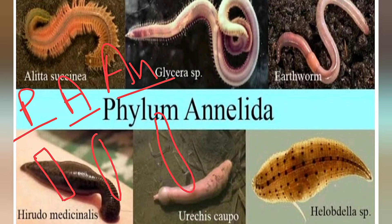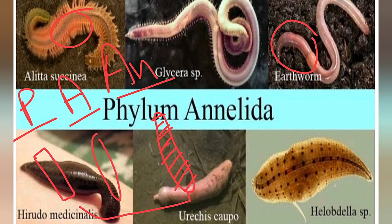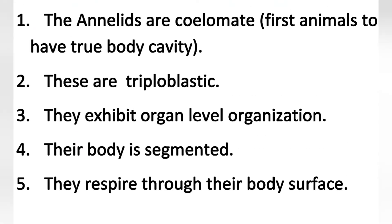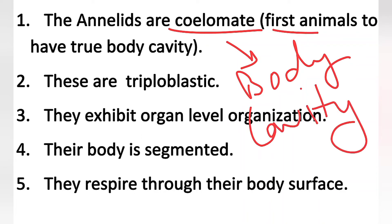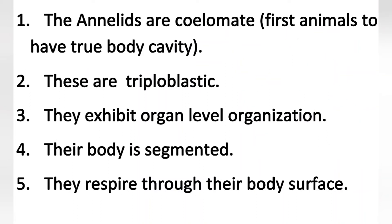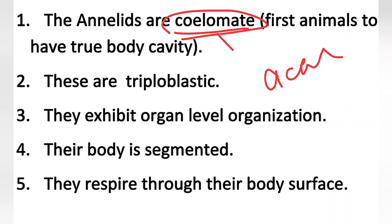Annelids are coelomates — they have a true body cavity. Remember, coelomate means body cavity is present. Annelids are the first animals to have a true body cavity, meaning a body cavity properly enclosed by mesoderm, not a temporary body cavity. These are coelomates.